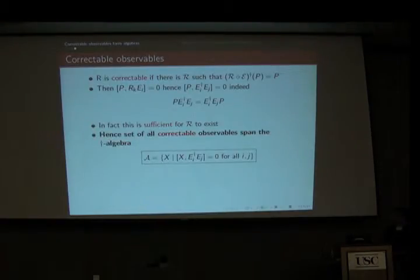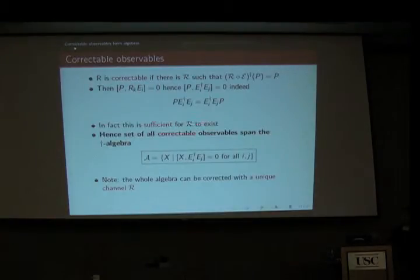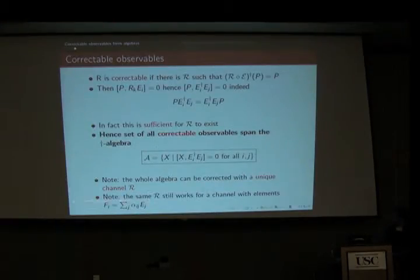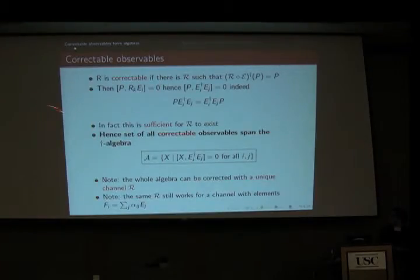We have characterized the set of all correctable observables: they span the algebra of all operators commuting with all products of Kraus operators. Two important points: first, I didn't require each observable to be correctable with the same channel, but in fact they all are — there exists a unique correction channel. Second, if we form a new channel with linear combinations of the E_j, the same correction channel still works. This is why we can treat discrete errors in this picture too.